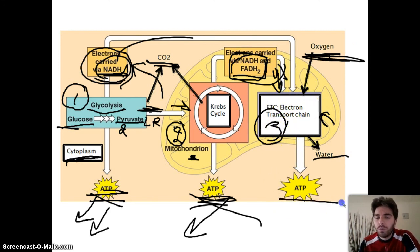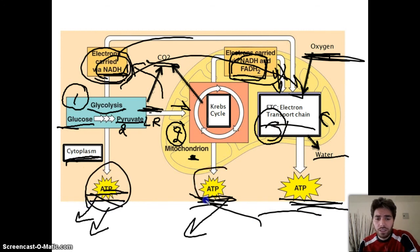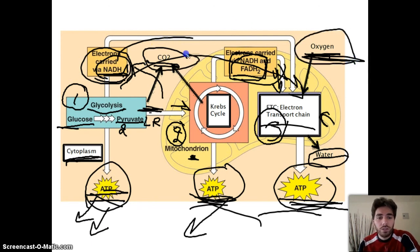This step will give us much, much more ATP using these electron carriers which will deliver their electrons into the electron transport chain, so we get a lot of ATPs here. This is the reason: we got ATP, we got water, we used oxygen, we got a lot of CO2 - six CO2 - and we used the glucose, so we've used every part of the reaction.